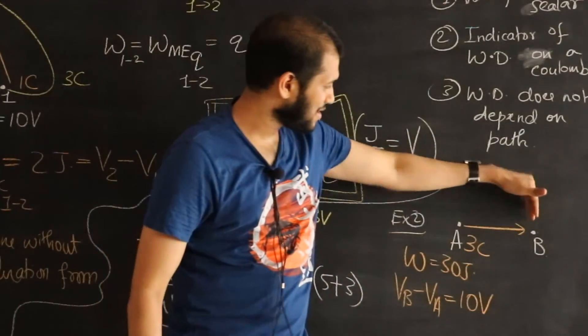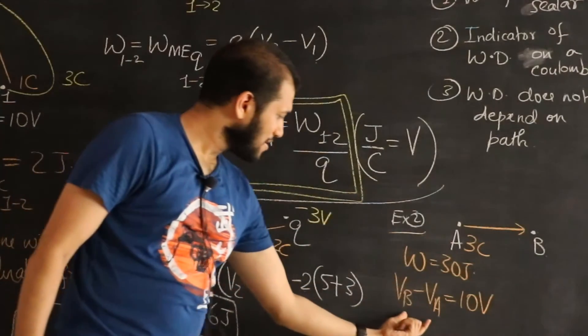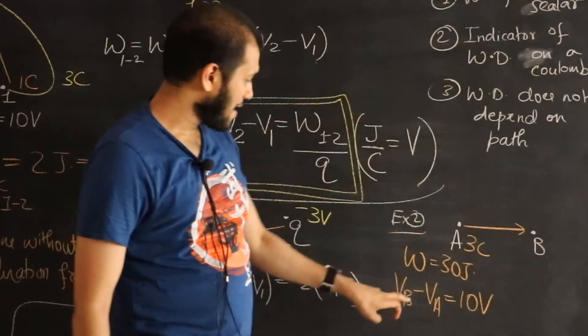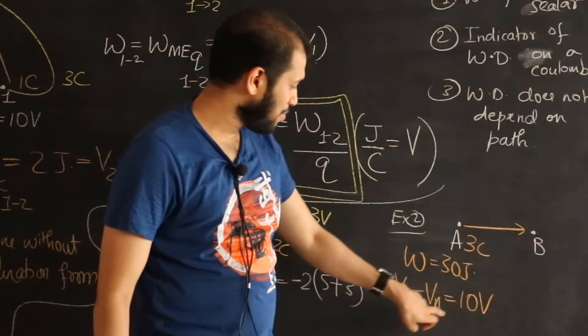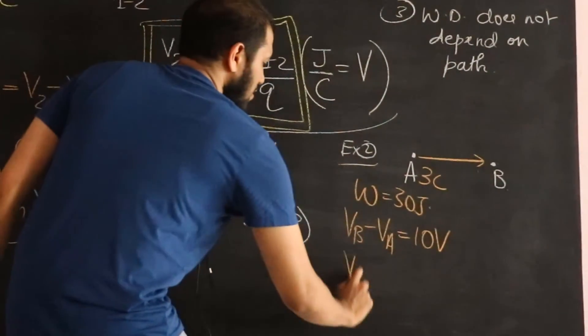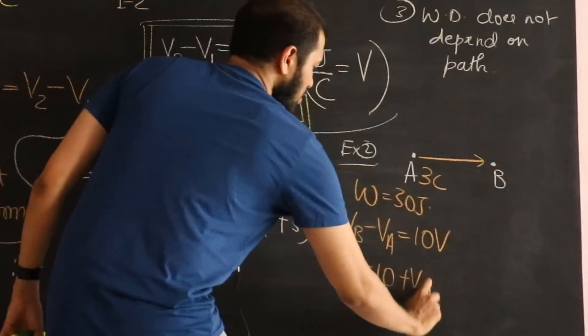So I know the potential difference is 10 volts. But wait. What's the potential here and potential here? This number is telling me that VB is 10 plus VA. Look, this tells me VB is 10 plus VA.